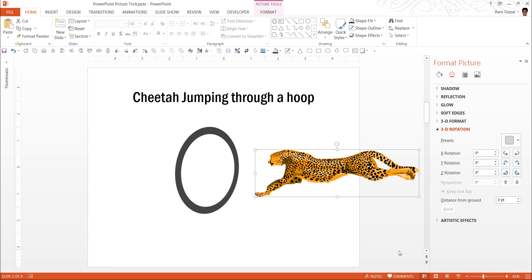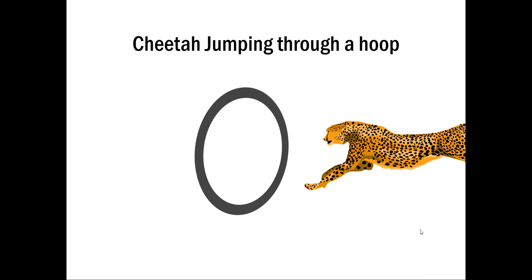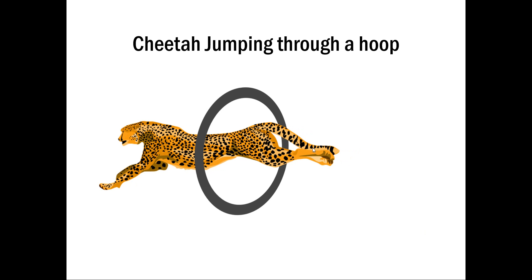Now let us see how the animation plays because I have just used a very simple motion path animation from right to left. And there it is. The cheetah is jumping through the hoop.